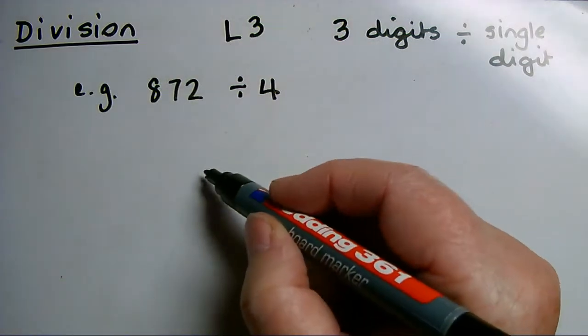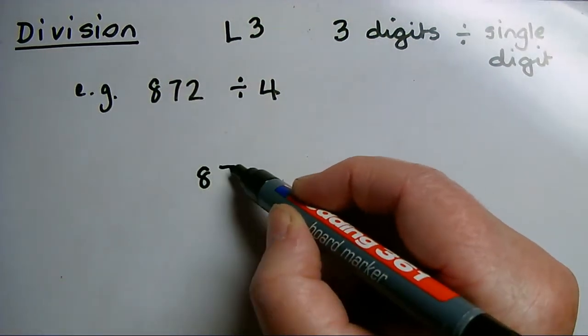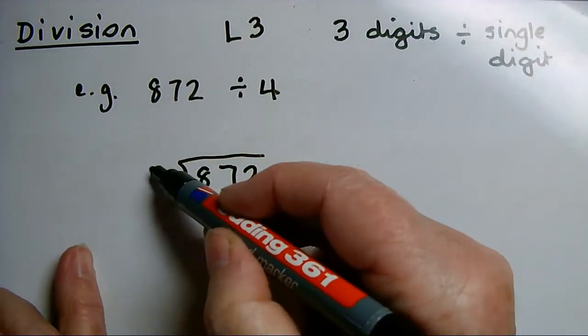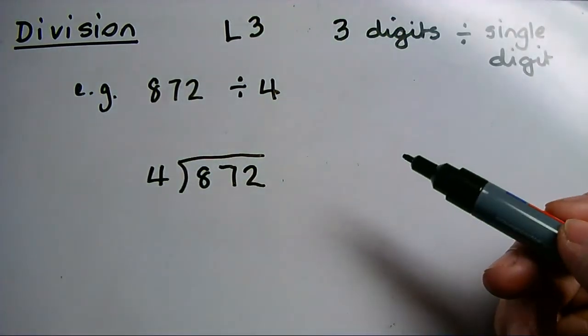The larger number I want to divide, 872, goes under the bus stop, and the 4 that I'm dividing by goes in front.